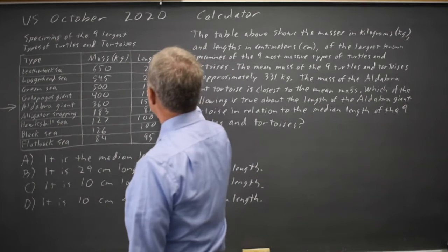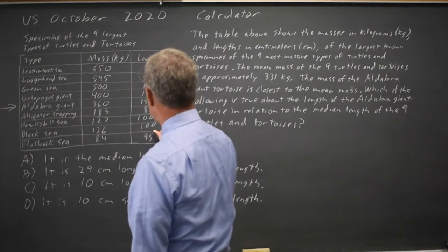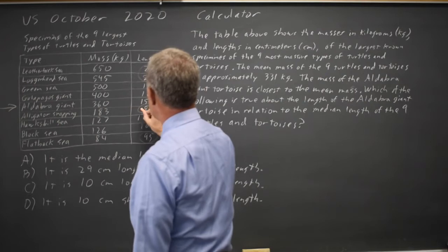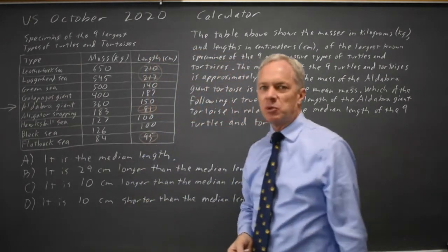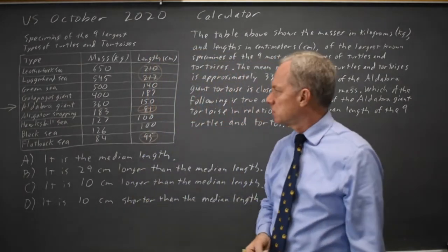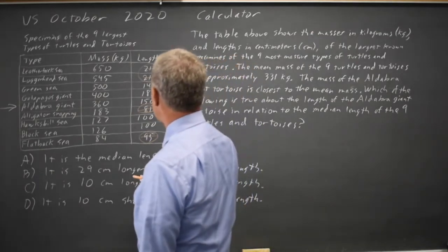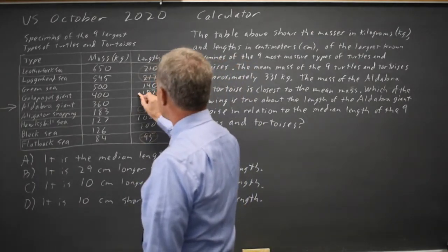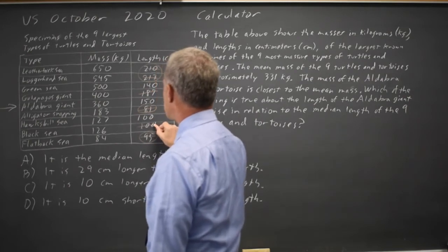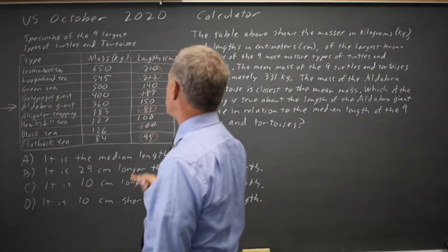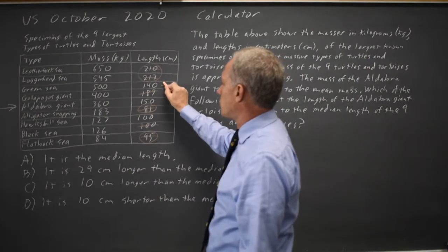To find the median length, I'm going to cross out the two longest and the two shortest. The two in the 200s are clearly the longest, and the two below 100 are the shortest. Now if I get rid of the largest and smallest — that's 187 and 100 — I only have three values left, and the median is 140.